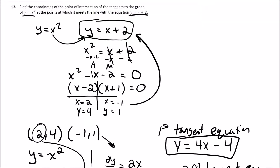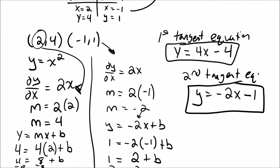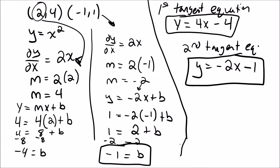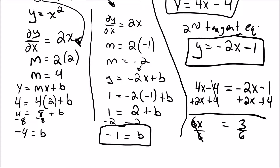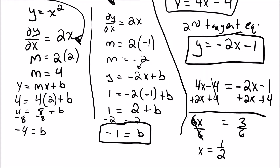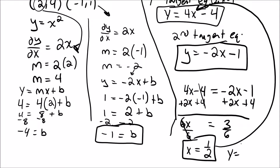Now I need to find where the two tangent lines intersect. Setting them equal: 4x minus 4 equals negative 2x minus 1. Adding 2x to both sides and adding 4 to both sides gives 6x equals 3, so x equals one half. Substituting back into the first equation: 4 times one half minus 4 equals 2 minus 4, which is negative 2.